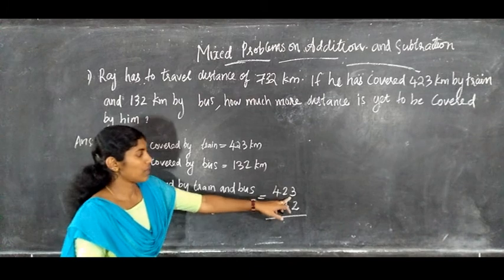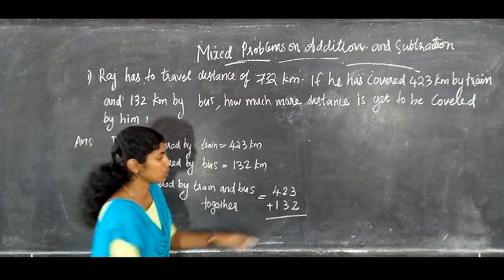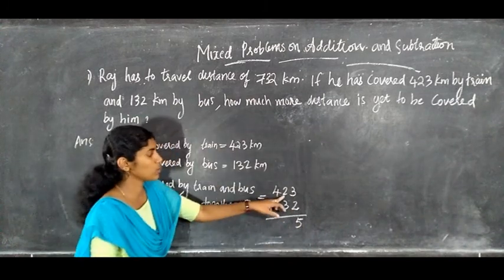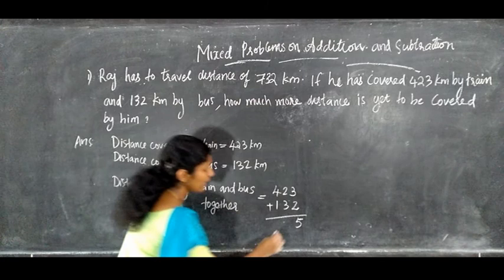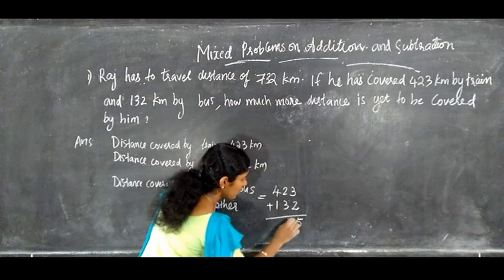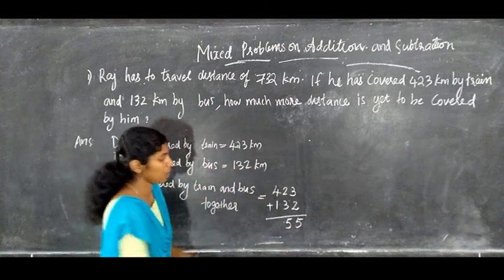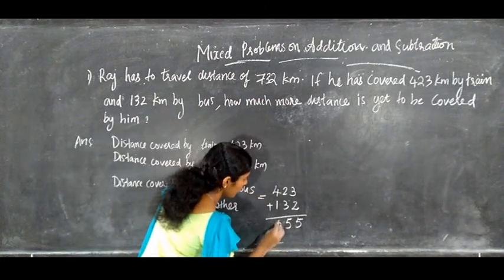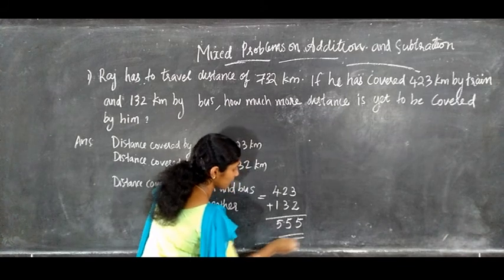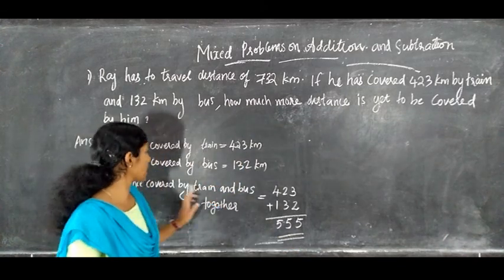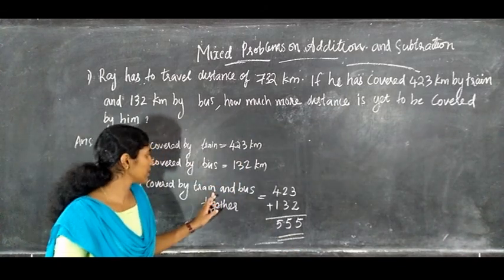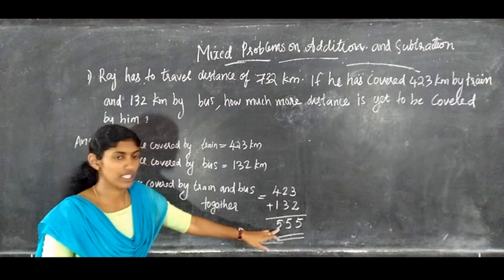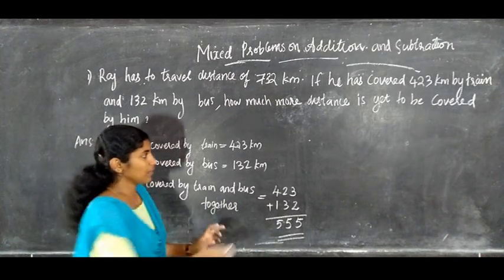Add the ones: 3 plus 2 equals 5. Then add the tens: 2 plus 3 equals 5. Then add the hundreds: 4 plus 1 equals 5. So the distance covered by train and bus together is 555 km.